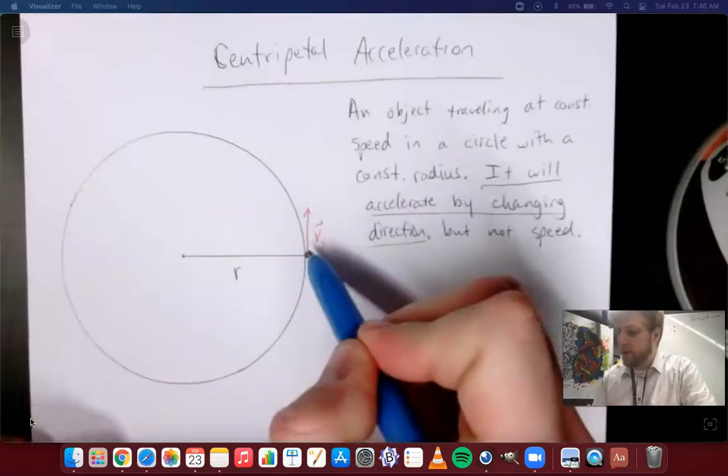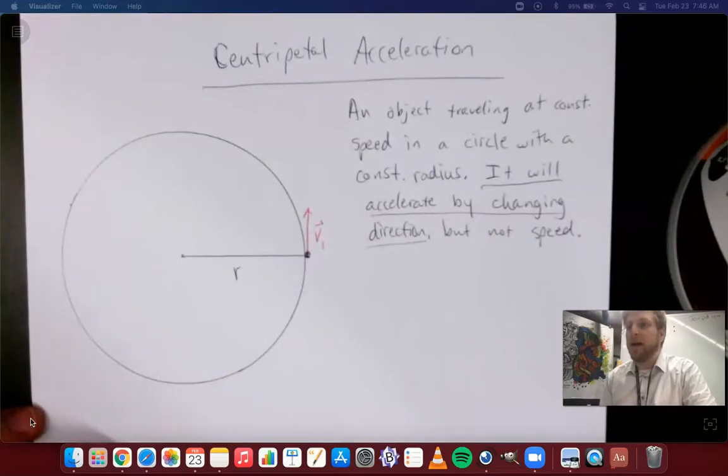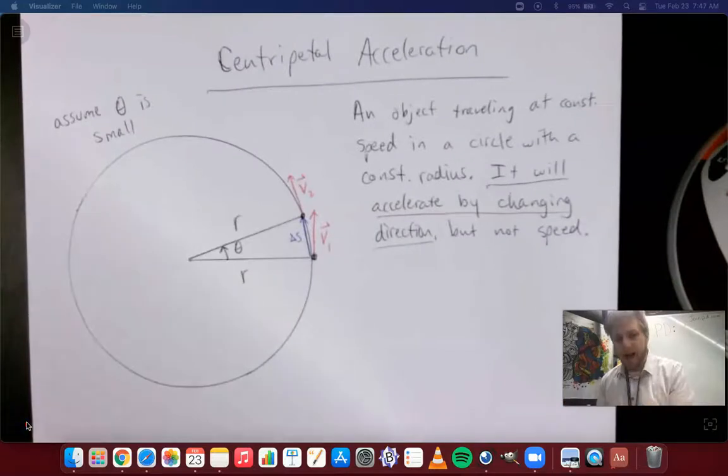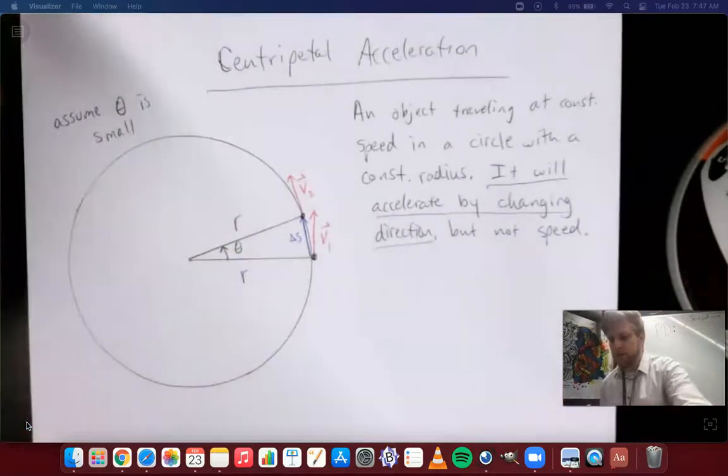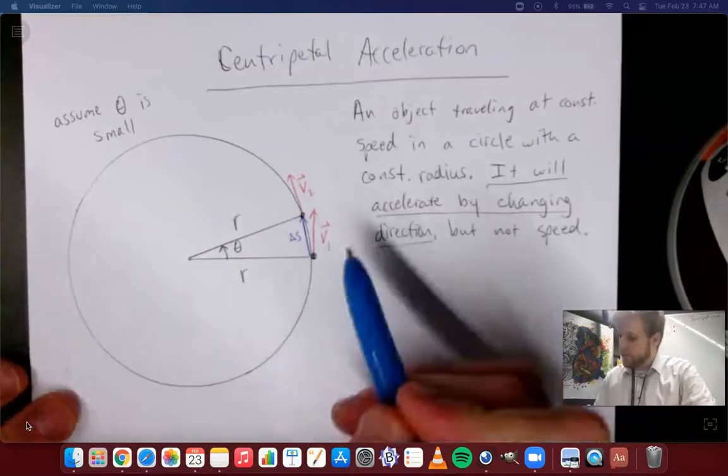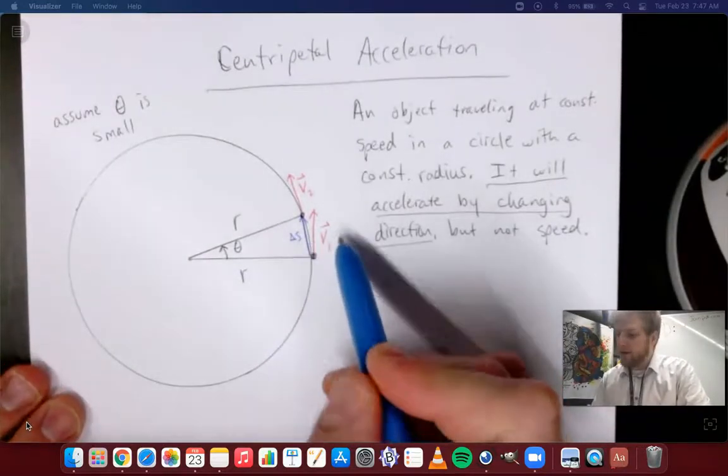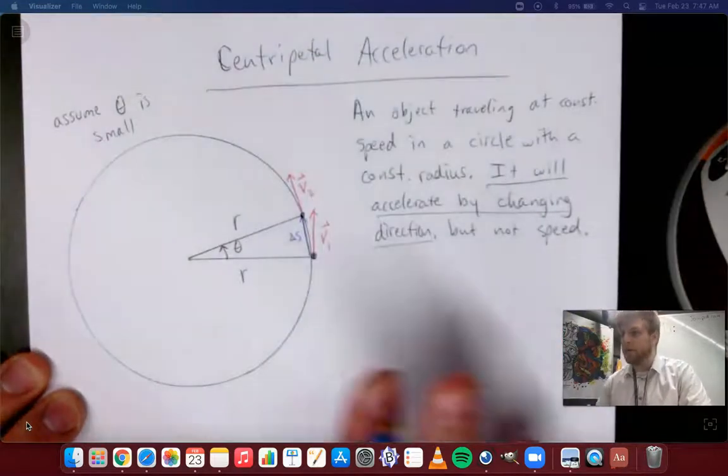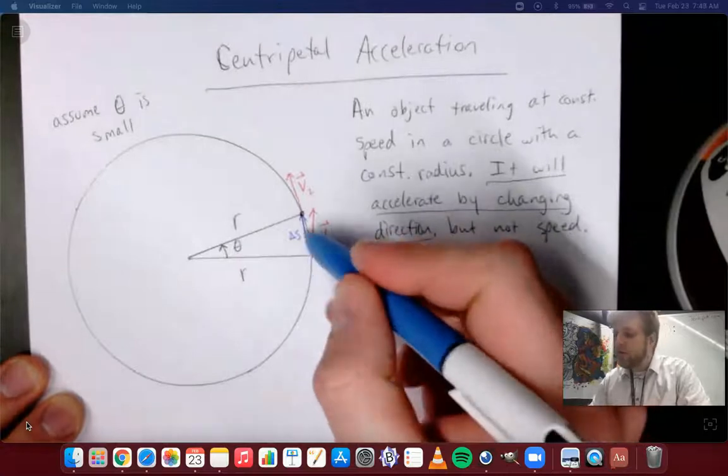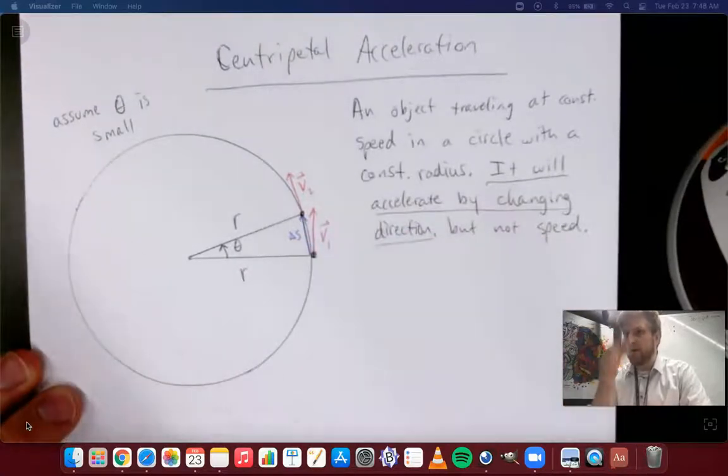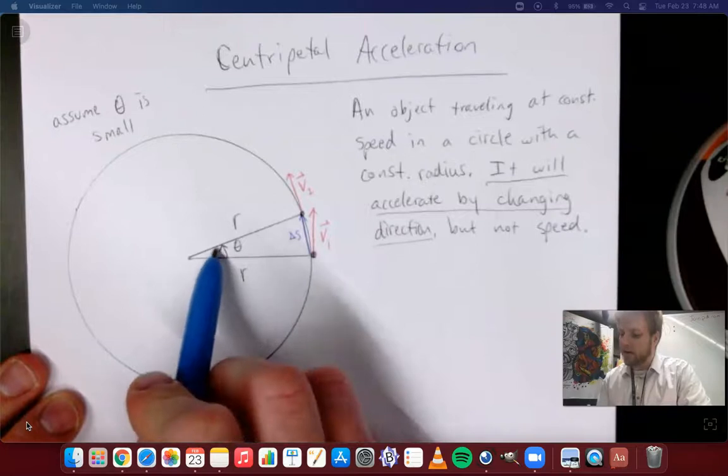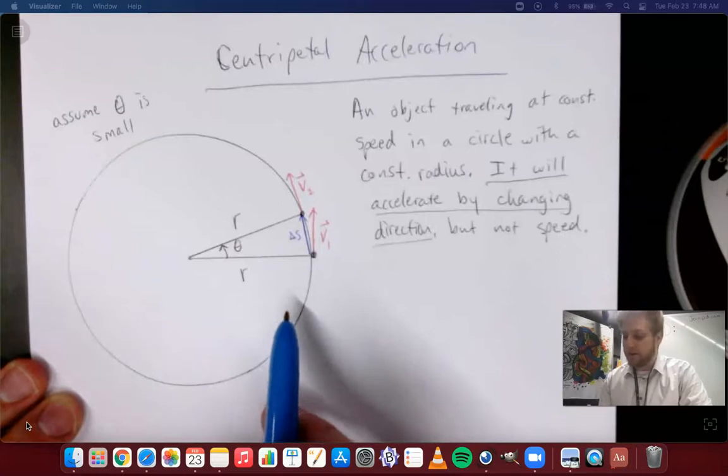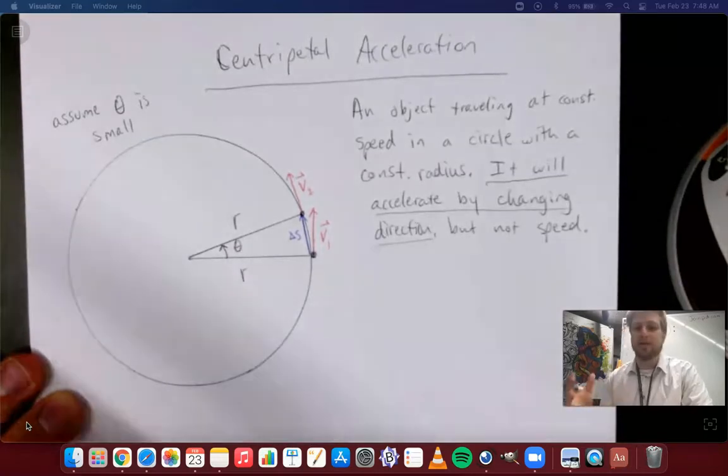So what we're going to do to show that is we're going to let it go forward just a tiny bit, and we're going to do some analysis of the vectors and things like that. So I've let some time elapse, our object is moving counterclockwise around the circle from a velocity of v1 to a velocity of v2. Now I've tried my very best to draw the magnitudes the same and we'll note that in just a moment. What's important is that it's moved in physical space and it's slightly changed directions. We're going to assume that the angle that it's traveled around the circle, remember all the way around would be 360 degrees or 2 pi radians, we're going to assume that the angle is very small.